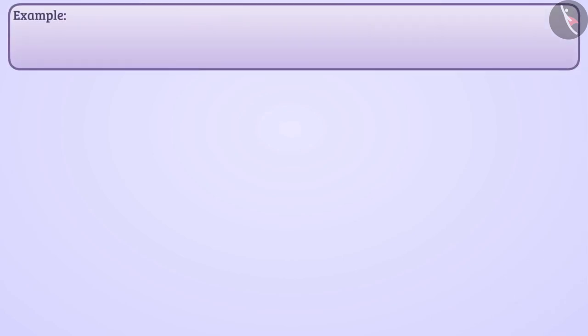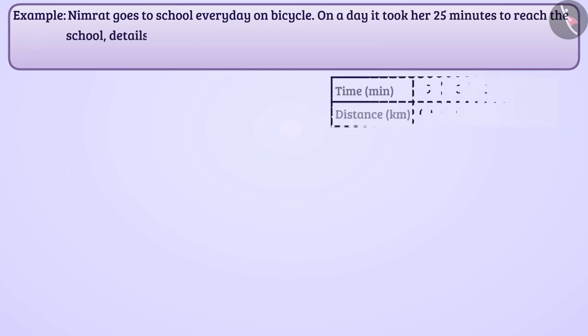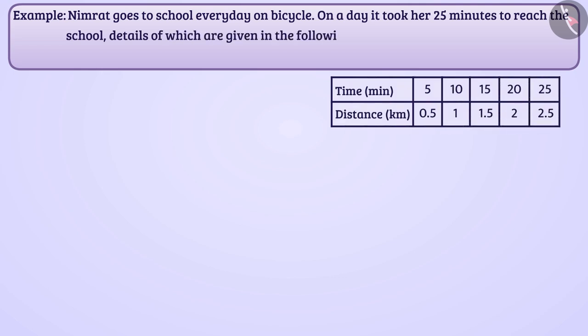Next example. Nimrat goes to school every day on bicycle. On a day, it took her 25 minutes to reach the school. Details of which are given in the following table.